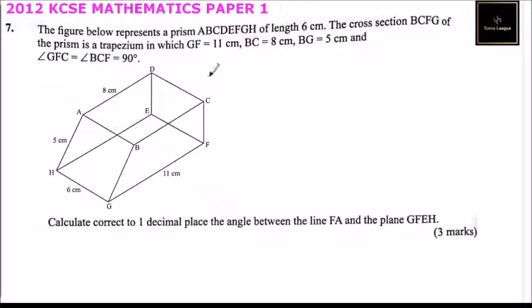Angle GFC is equals to angle BCF, which is 90 degrees. So they are vertical. We have our diagram here.